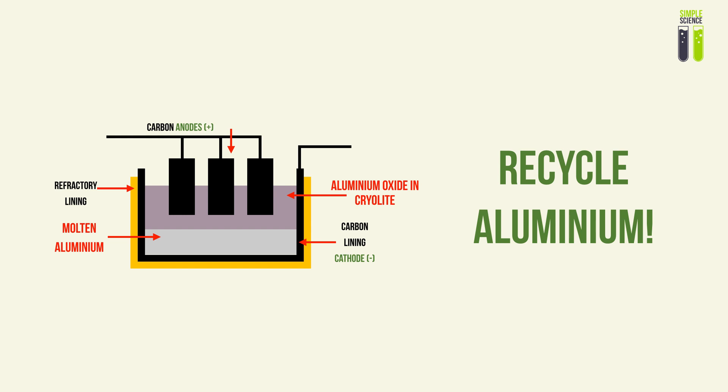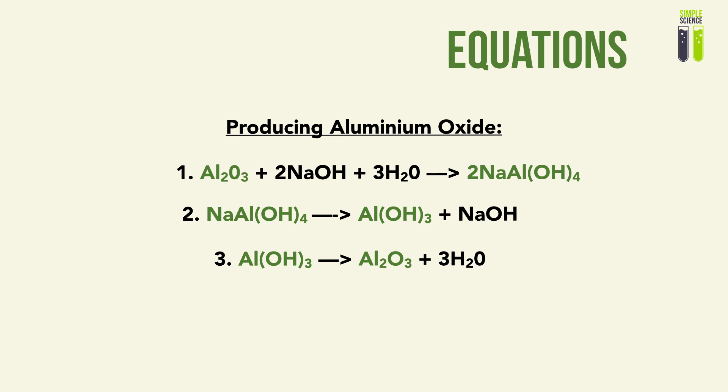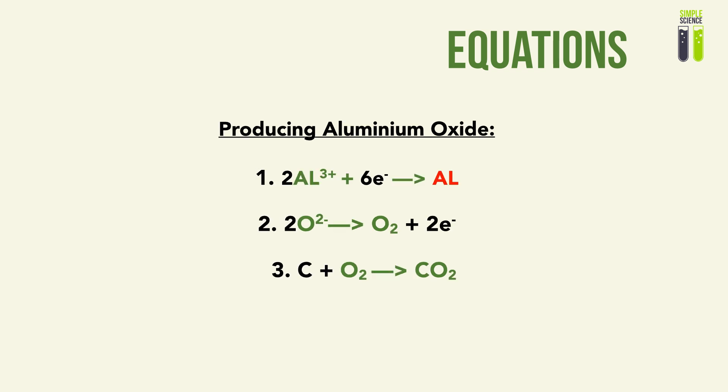For all the processes needed to learn the extraction of aluminium, you can associate one equation per process. For the first three steps preparing aluminium oxide for electrolysis: equation one is the formation of sodium tetrahydroxoaluminate, equation two is the precipitation of aluminium hydroxide, and equation three is the formation of pure aluminium oxide. These are complemented by the main electrolysis equations, which are the most important equations for this topic. That wraps up this video on the extraction of aluminium as an example of industrial electrolysis. Good luck with your revision!